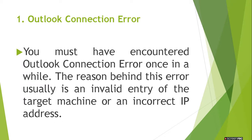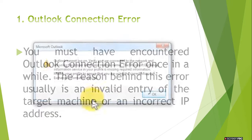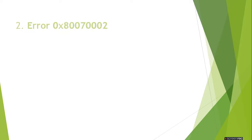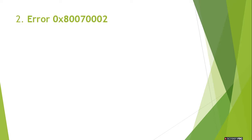You must have encountered the Outlook connection error once in a while. The reason behind this error is usually an invalid entry of the target machine or an incorrect IP address. The solution to resolve this type of error is to set a standard and correct IP address to your machine.